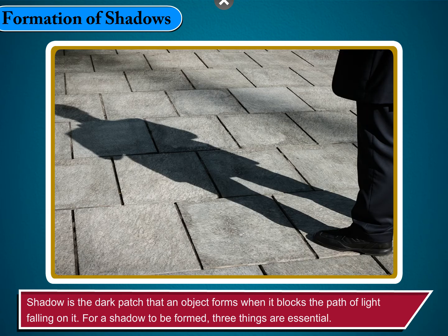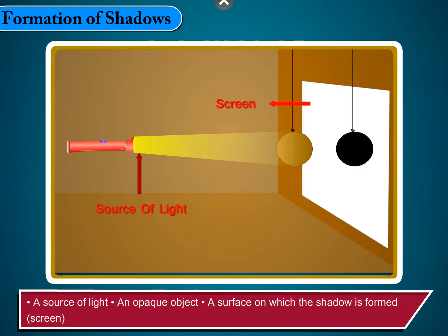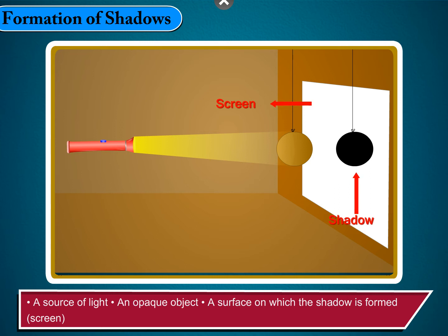For a shadow to be formed, three things are essential: a source of light, an opaque object, and a surface — or screen — on which the shadow is formed.